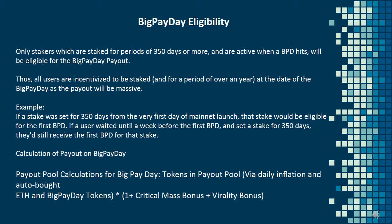Example: If a stake was set for 350 days from the very first day of mainnet launch, that stake would be eligible for the first Big Payday. If a user waited until a week before the first Big Payday and set a stake for 350 days, they'd still receive the first Big Payday for that stake.